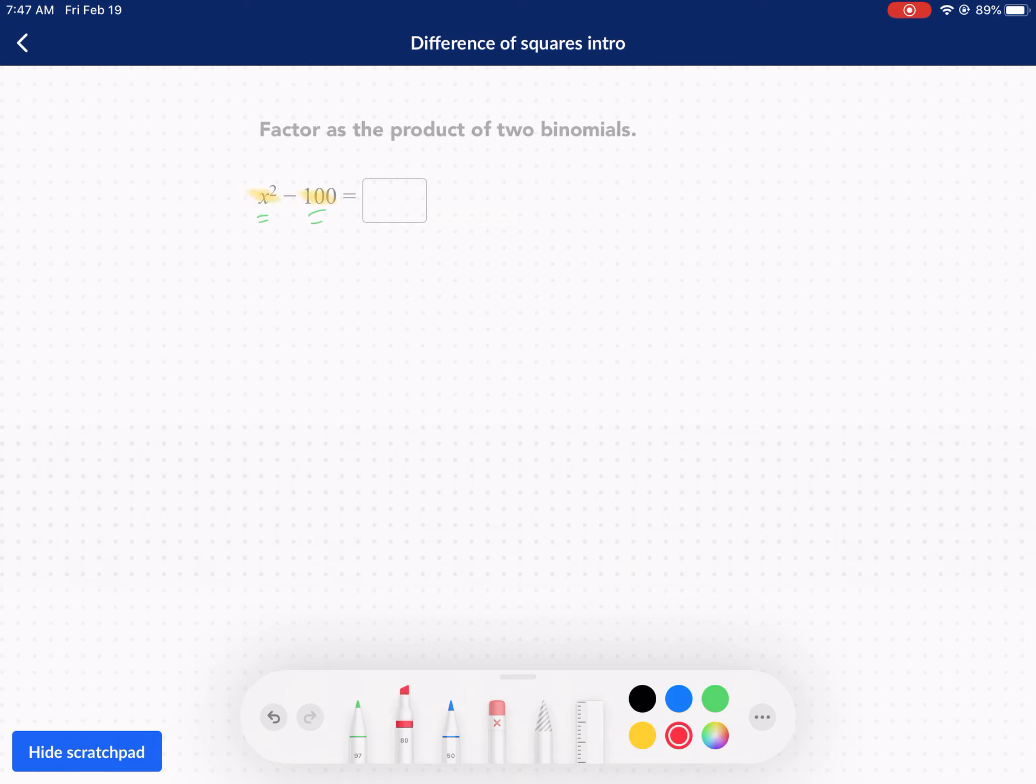The second thing we need to recognize is that both of these terms are perfect squares. What do I mean by that? If we take the square root of x squared, we're going to get a value that's a rational value. And then we take the square root of 100, we're not going to get a decimal. We're going to get 10.